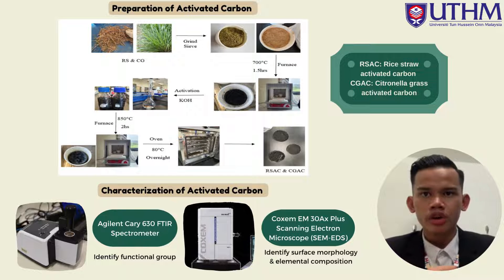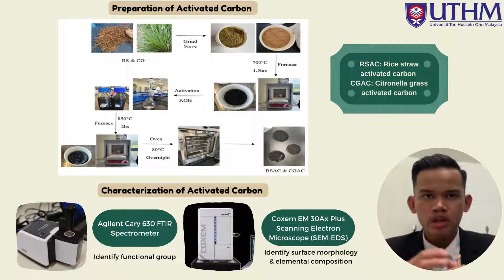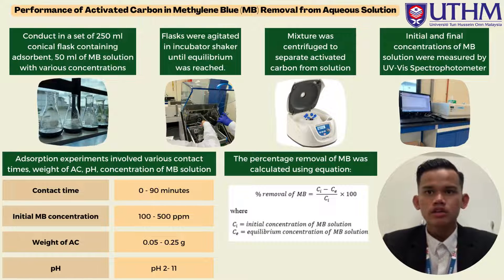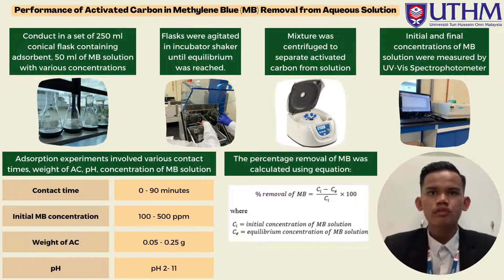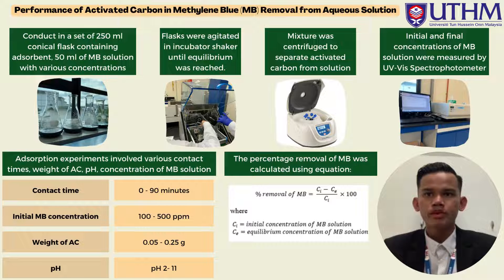After that, the carbon was separated from the KOH and dried overnight. The activation process involved heating the carbon in the furnace. The activated carbon was then neutralized using dilute acid and dried in the oven overnight. The activated carbon was then identified for functional groups using FTIR spectroscopy and analyzed for elemental compositions using scanning electron microscopy (SEM). The adsorption experiments were conducted in a set of conical flasks containing 50 mL of Methylene Blue solution at various concentrations. The flasks were agitated in an incubator shaker until equilibrium was reached. The mixture was centrifuged to separate the activated carbon from the solutions. The initial and final concentrations of Methylene Blue were measured by UV-Vis spectrometer.